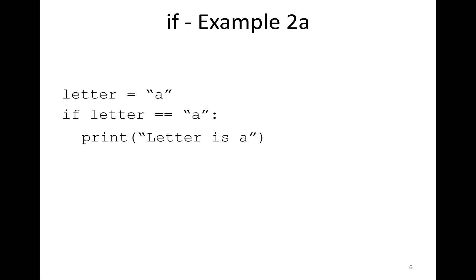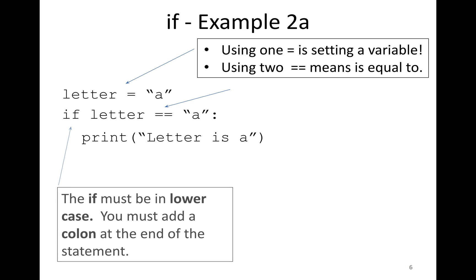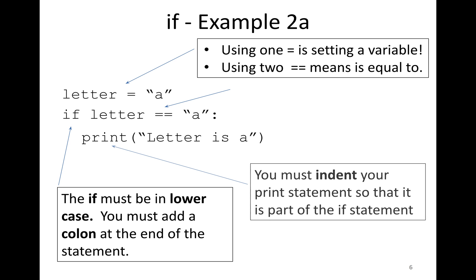For example: letter = 'a', if letter == 'a': print('letter is a'). One equal sign means assigning a variable; two equal signs means checking equality. The if keyword must be in lowercase, you must add a colon at the end of the if statement, and you must indent your print statement so it is part of the if block.